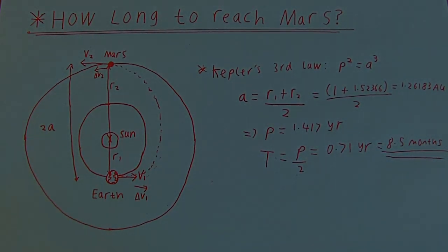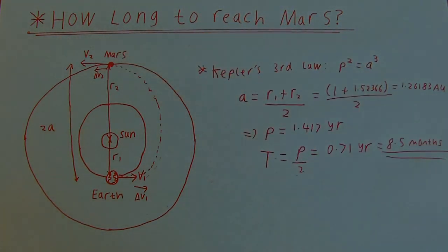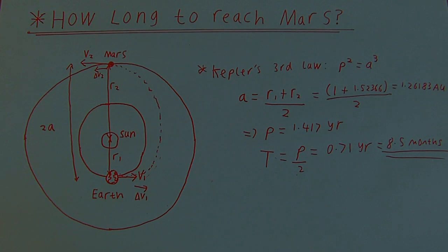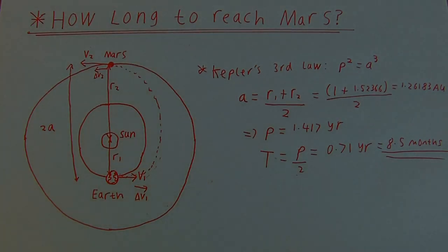It's worth mentioning that in the real world, Hohmann transfer orbits can vary anywhere between 6 and 8 months. That's due to things such as Mars's orbit not being perfectly circular — it's actually quite elliptical, which we've neglected in this calculation. There's also the influence of Jupiter's large gravity near Mars, and general relativistic effects — though those are ridiculously small. Even with all these approximations, we get an answer extremely close to what you'd see in the real world.